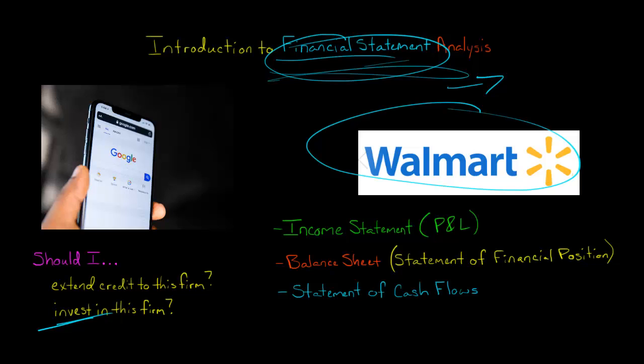So Walmart, being a publicly traded company in the United States, they are required to put out financial statements. They have to be audited by an external auditor. And then investors like me can look at those financials and have an idea of how the company has performed in the past. Now, that's no guarantee about how it's going to perform in the future, but I can make judgments based on sales have been increasing or sales have been declining. And I think this trend will continue or reverse and so forth.